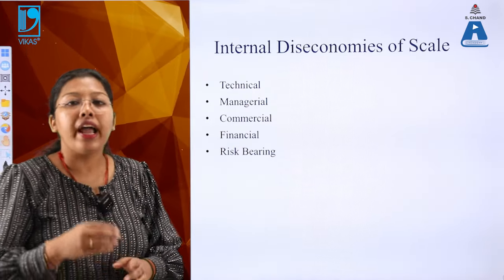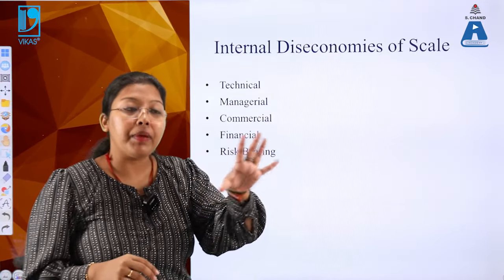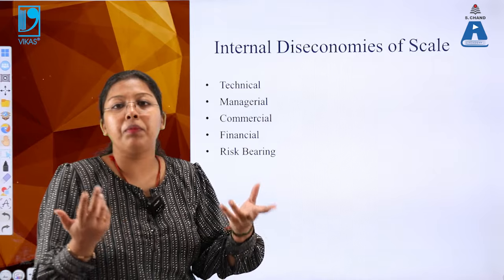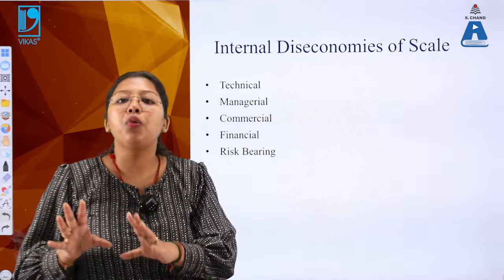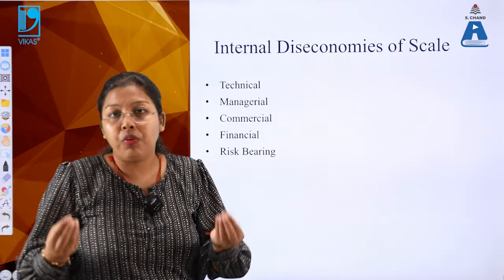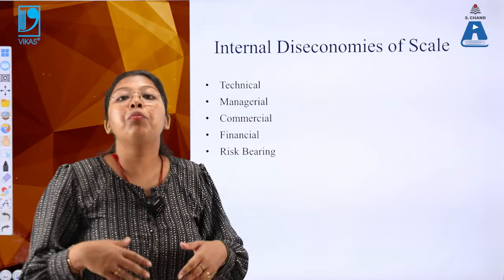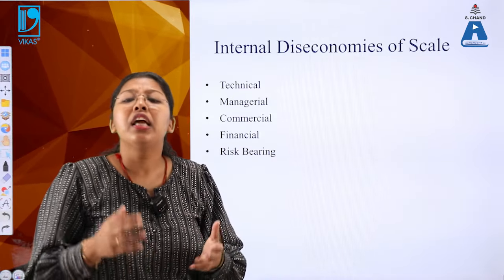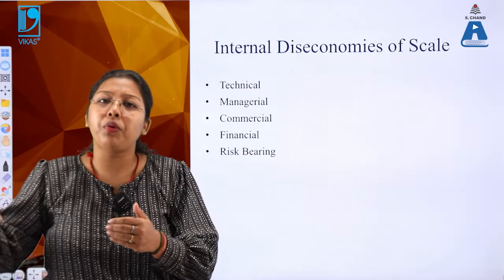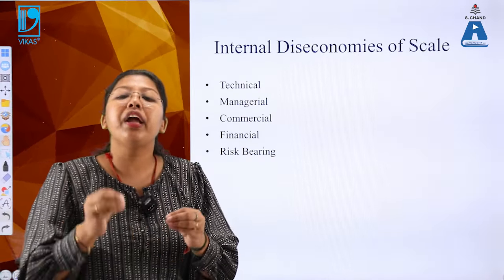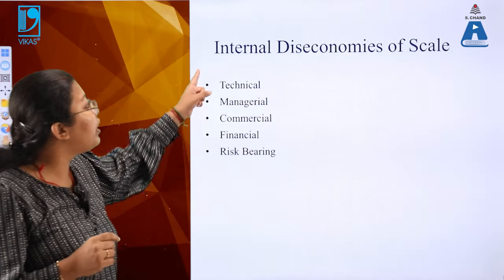Diseconomies can arise because machinery used ten years ago may not give the same output today. Some rare cases may continue performing well, but eventually all inputs start diminishing. That is where diseconomies start working. So what are the various reasons for internal diseconomies of scale? Technical - for example, outdated machinery.